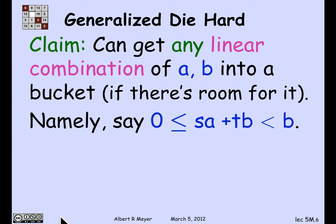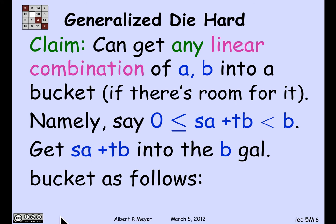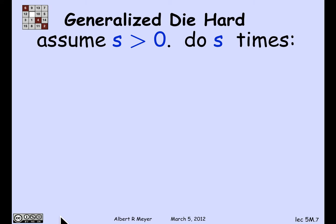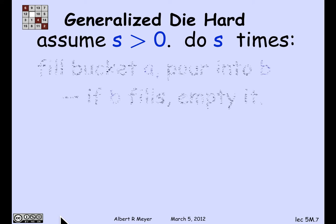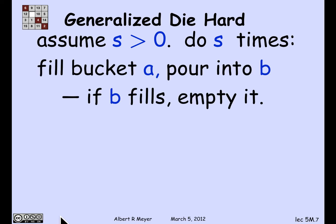Suppose I have a linear combination of A and B — SA plus TB — that will fit in bucket B, meaning it's greater than or equal to 0 and less than B. How do I get that amount into bucket B? We can assume S is positive — we've already seen we can arrange that. So what we're going to do is repeat the following procedure S times: fill up bucket A and pour it into bucket B. Whenever B gets filled up, dump it so it's empty, and keep filling up bucket A and pouring it into bucket B, repeating that S times.